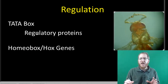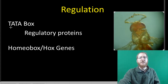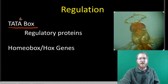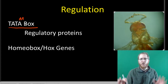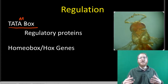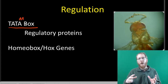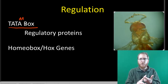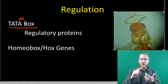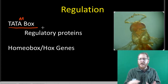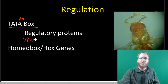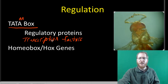With eukaryotes, there's a promoter at the beginning of a gene containing the TATA box — a thymine-adenine sequence. Many regulatory proteins can bind here to help determine whether RNA polymerase can bind. If RNA polymerase binds, transcription occurs, which ultimately means that gene is expressed. You might see these regulatory proteins called transcription factors, since they control transcription, and having a gene 'on' essentially means you're doing transcription.